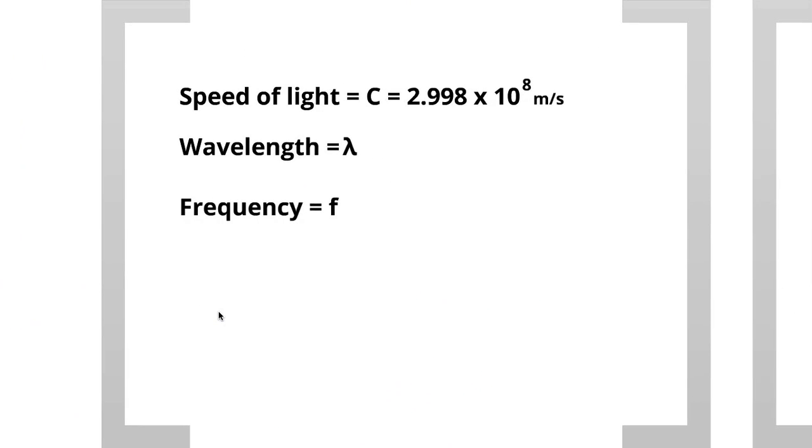There is a mathematical relationship between wavelength and frequency involving the speed of light because light exhibits wave-like properties. So, the speed of light is equal to C, which is 2.998 times 10 to the 8th meters per second.